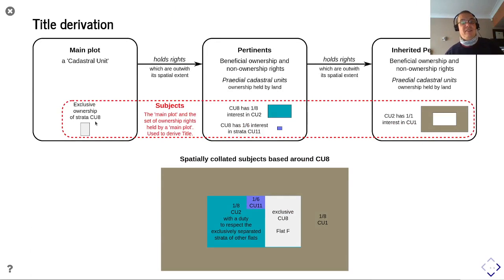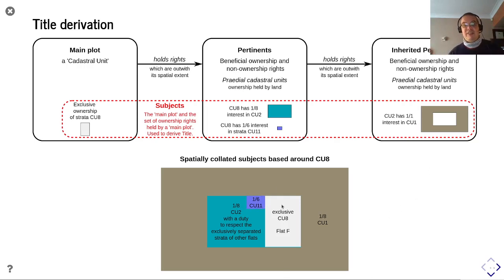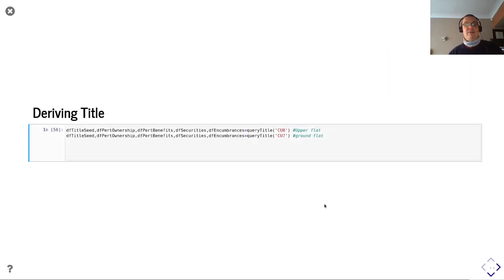We can now use this to derive title. Our seeding cadastral unit is cadastral unit 8, which is a strata. Its pertinences are: a one-eighth interest in the flatted building and a one-sixth interest in the lift. Because it has an interest in the flatted building, and cu2 has a one-over-one exclusive ownership over cu1, this resolves into cu8 having a one-sixth share in the lift, one-eighth in the flatted building, and one-eighth in the other building — the grounds.